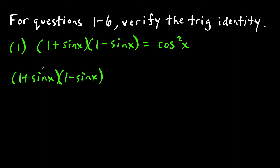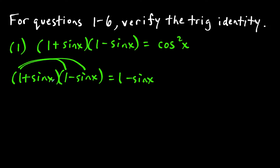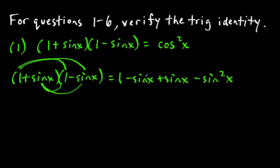So we're going to multiply this out. We have one times one is one, and then one times negative sine x is minus sine x. Then distributing the sine x, we get sine x times one is sine x, and sine x times negative sine x is minus sine squared x. So minus sine x plus sine x cancels out, leaving us with just one minus sine squared x.